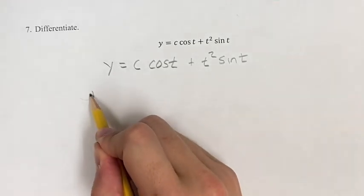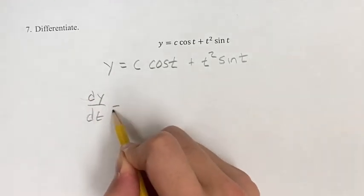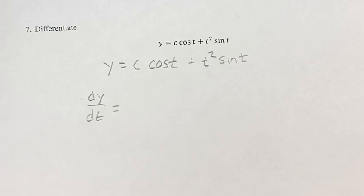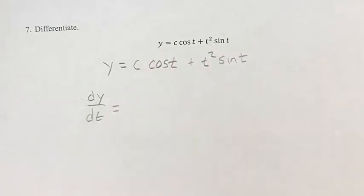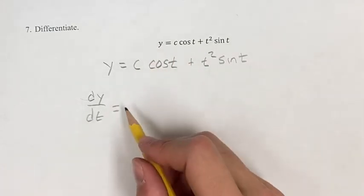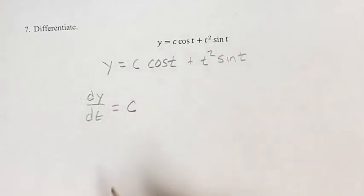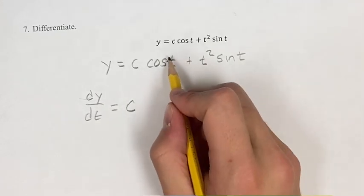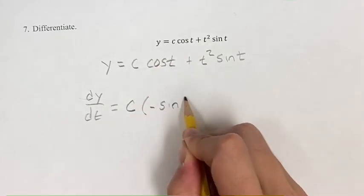So we have dy/dt, our derivative, is equal to: the derivative of c cosine t is just c, some constant, times the derivative of cosine t, which is negative sine t.